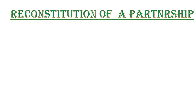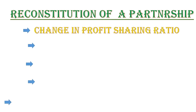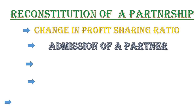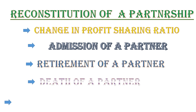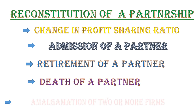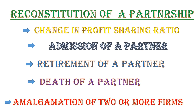The five situations for reconstitution of a partnership are: first, change in profit sharing ratio; second, admission of a partner; third, retirement of a partner; fourth, death of a partner; and the fifth is amalgamation of two or more firms.